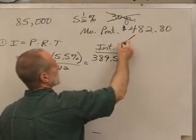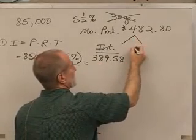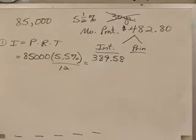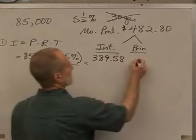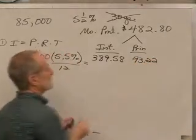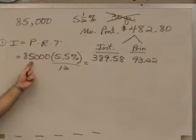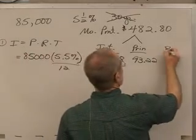And remember, we pay off the interest first. We subtract that from the payment, and that's how much gets to go to reduce our principal. And then we subtract that from our $85,000, and that's how much we now owe: our ending balance.